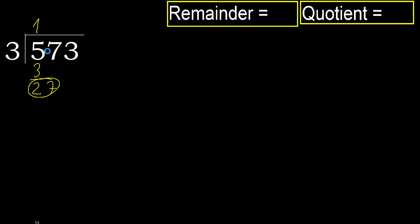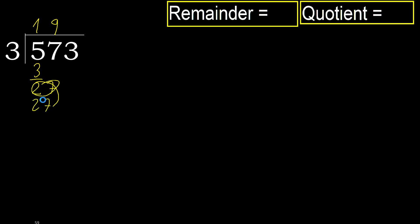Bring down to get 27. 3 multiplied by 9 equals 27, which is not greater. Subtract: 27 minus 27 equals 0. Next.